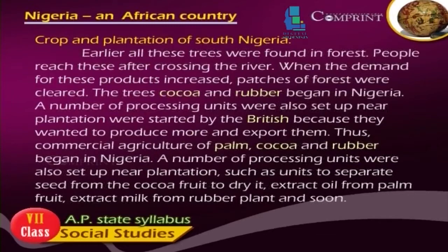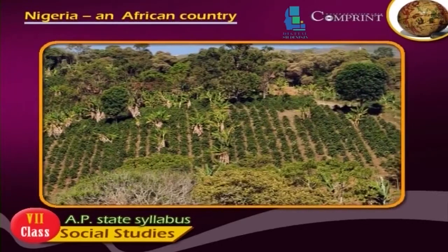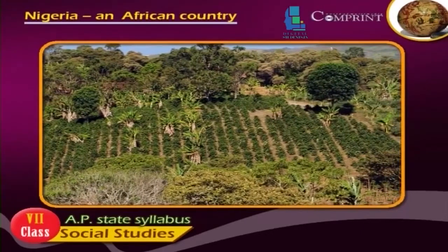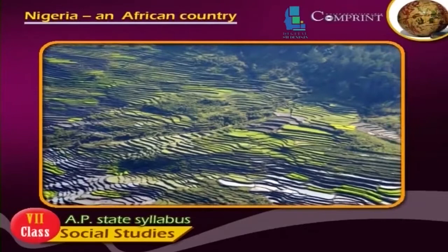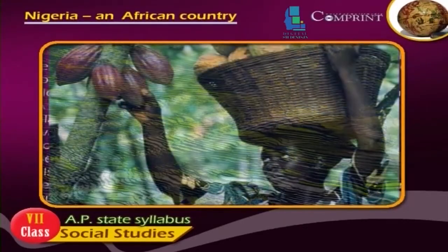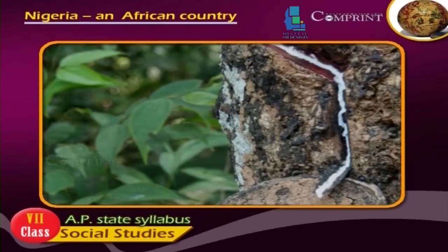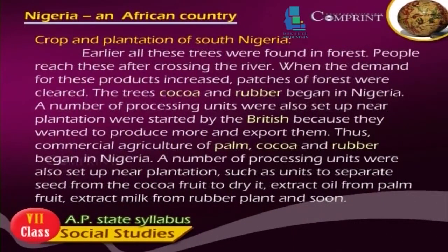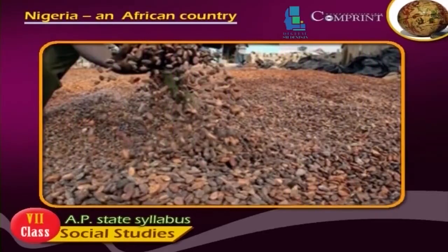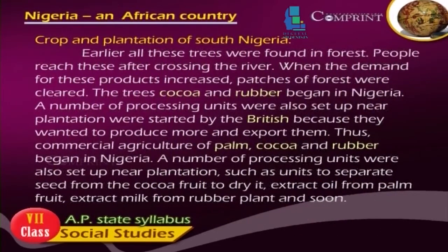Crops and Plantations of South Nigeria. Earlier, all these trees were found in forests, and people reached them after crossing rivers. When the demand for these products increased, patches of forests were cleared. Commercial agriculture of palm, cocoa and rubber began in Nigeria, started by the British to produce more and export them. A number of processing units were also set up near the plantations — such as units to separate seed from the cocoa fruit, dry it, extract oil from palm fruit, and extract milk from rubber plants.